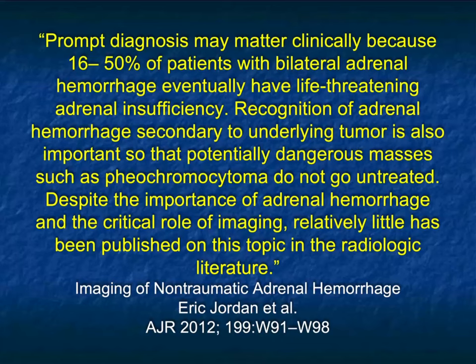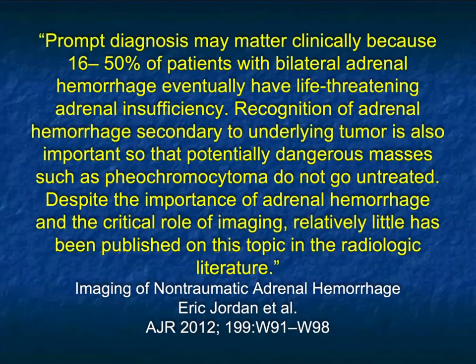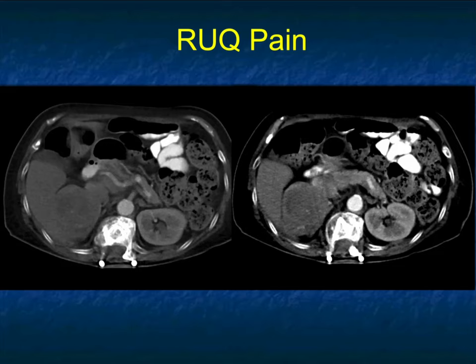If you have bilateral adrenal bleeds, that's usually not tumor — you don't typically get mets that both bleed. It's more often anticoagulant therapy or stress. With bilateral adrenal bleeds, you have to worry because the patient can develop Addisonian crisis and can die if you don't make the diagnosis. Most of the time, particularly when tumor-related, it's unilateral — and with trauma it's usually unilateral and most commonly involving the right adrenal.